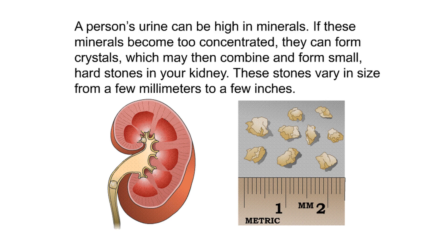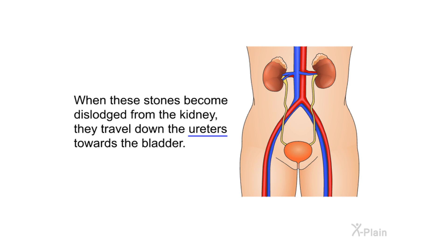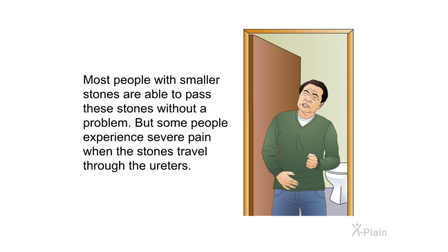Urine is emptied through the urethra. Kidney stones form when a person's urine is high in minerals. If these minerals become too concentrated, they can form crystals, which may then combine and form small hard stones in the kidney. These stones vary in size from a few millimeters to a few inches. When stones become dislodged from the kidney, they travel down the ureters towards the bladder.